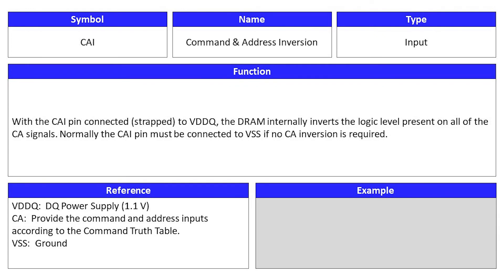Command and address inversion is an input signal. Its symbol is CAI. With the CAI pin connected or strapped to VDDQ, the DRAM internally inverts the logic level present on all of the CA signals. Normally, the CAI pin must be connected to VSS if no CA inversion is required.